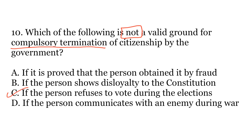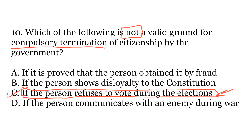The correct option is C. If a person refuses to vote during the elections. While it is a right of every person to vote, even if a person does not vote, that does not in any way deprive him of his citizenship — it is a matter of personal choice. All other three are valid grounds: if a person obtains citizenship by fraud, shows disloyalty to the constitution, or communicates with an enemy during war, his citizenship can be terminated.